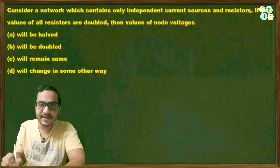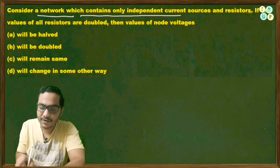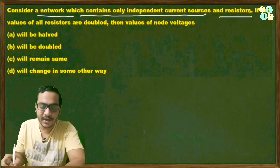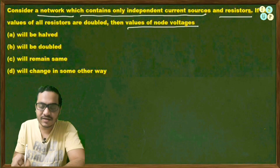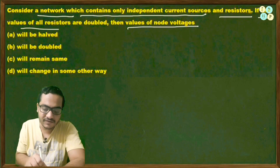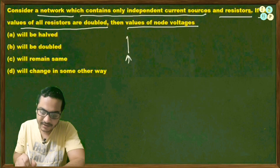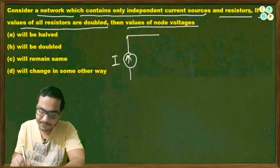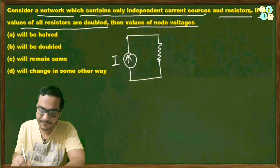The next question asks: in a network containing only independent current sources, voltage sources, and resistors, what happens to the node voltages if all resistor values are doubled? To understand this, let's draw a simple circuit with a current source delivering current i and two resistances in parallel.